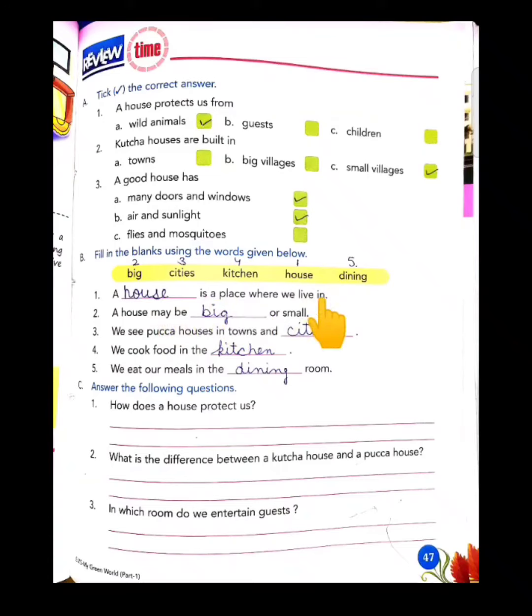A dash is a place where we live in. A house. A house may be dash or small. Big or small.